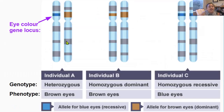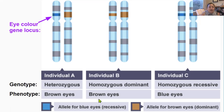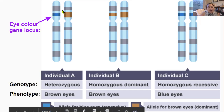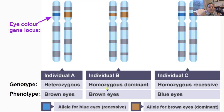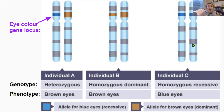This picture shows the different genotype possibilities for eye color. The allele for brown eyes is dominant and the allele for blue eyes is recessive. Individual A has a heterozygous genotype of one blue and one brown allele, giving a phenotype of brown eyes. Individual B has a homozygous dominant genotype of two brown alleles, also giving brown eyes. Individual C has a homozygous recessive genotype of two blue alleles, giving a phenotype of blue eyes.